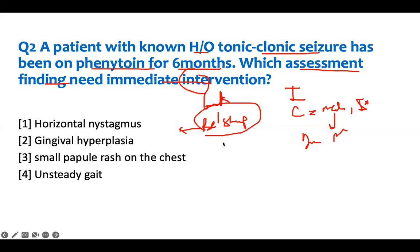Phenytoin is an anti-seizure medication with multiple side effects. The worst is Stevens-Johnson syndrome. Also concerning: a pregnant woman taking it — the baby can have defective symptoms and neural tube defects. Horizontal nystagmus — your eyes flipping back and forth — is a common, expected side effect of phenytoin. Gingival hyperplasia is also a common side effect, usually in young patients taking over 500 mg twice a day. These are expected; don't get distracted by them.